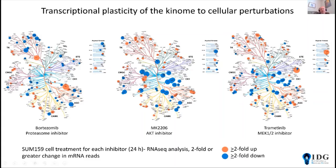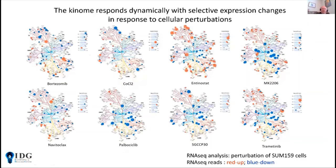The cell is able to sense the inhibition of a specific pathway and respond in an attempt to bypass that perturbation. With eight different treatments — AKT inhibitor MK2206, trametinib, bortezomib, a BCL2XL inhibitor, palbociclib (CDK4/6 inhibitor), a histone acetyltransferase inhibitor, an HDAC inhibitor, and cobalt chloride as oxidative stress — the transcriptomic change of the kinome and expression of specific kinases is unique for each different perturbation. This demonstrates the remarkable plasticity of the kinome.